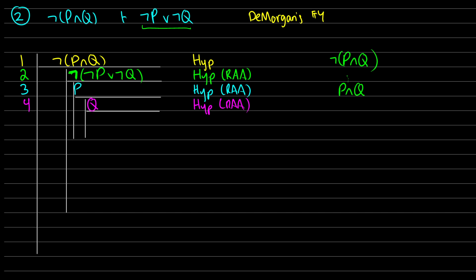At this point in line 5, at least we can get P∧Q together finally. From lines 3 and 4 we can use AND introduction. If we're being totally rigorous, I should reiterate P from line 3, and then in line 6 take lines 4 and 5 and do AND introduction to get P∧Q.